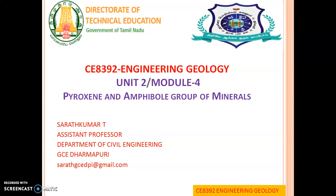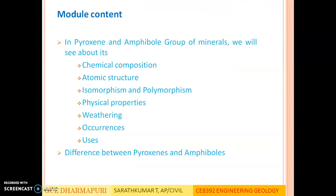Welcome to Part 2 of Module 4, Unit 2 - Mineralogy. In this part we will be seeing the remaining portion of pyroxene and amphibole group of minerals. In the previous Part 1 video we covered pyroxene group of minerals and part of the amphibole group. These two groups have similar chemical composition, isomorphism, polymorphism, and physical properties. The only difference is atomic structure: pyroxene groups are inosilicates with single chain silicates, whereas amphibole group are inosilicates with double chain silicates.